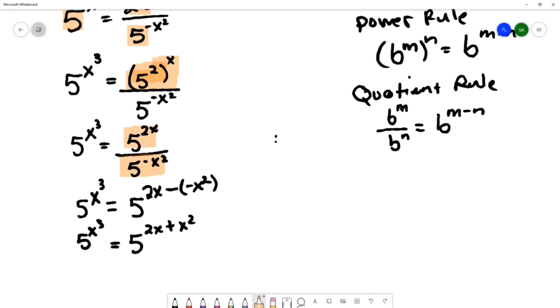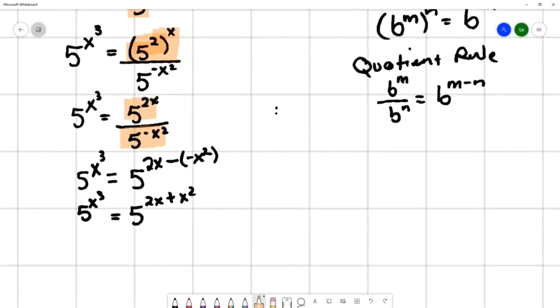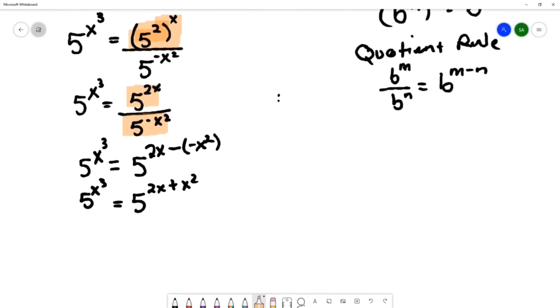So now that we've written it with the base being the same on both sides, we're going to apply that relating the bases property or the one-to-one property and say that the exponent on the left, x cubed, is equal to the exponent on the right, 2x plus x squared.